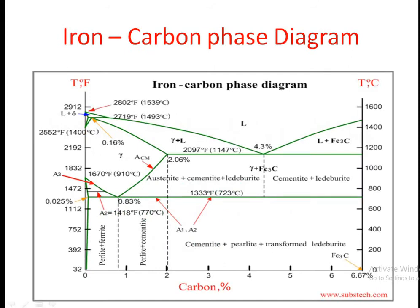Prior to the details of case hardening, as you all have learned about the iron-carbon phase diagram or equilibrium diagram, for better understanding of the process we will go through this iron-carbon phase diagram again. I want to show you the different temperature lines in the iron-carbon phase diagram. This diagram you have already learned in the metallurgical part, but we need to revise it. The temperature lines shown here include A1, A2, A3, Acm, and the different phases of this diagram.